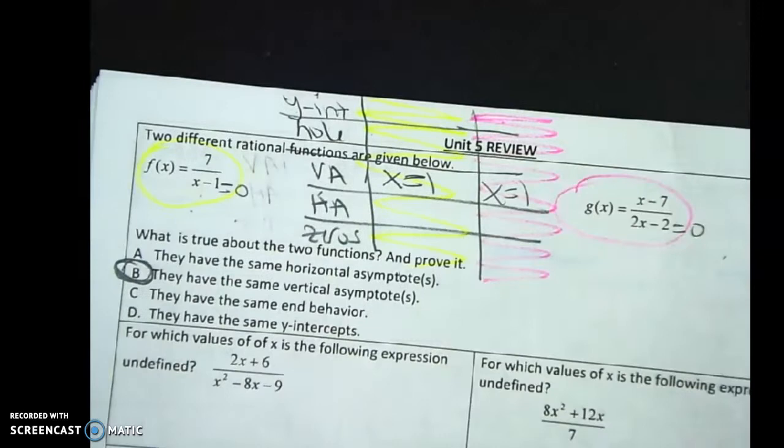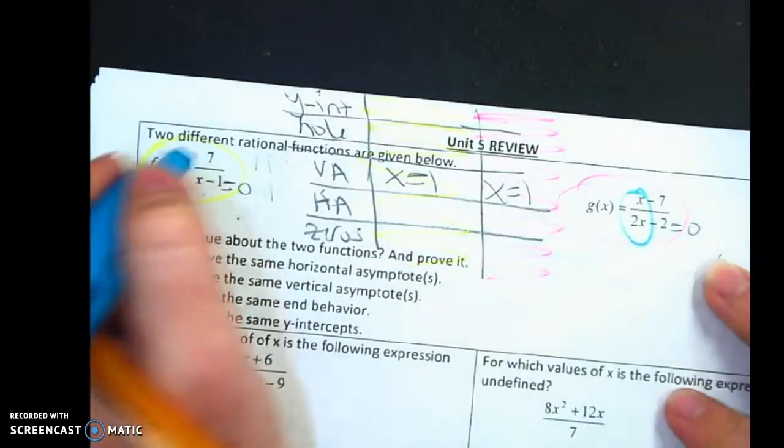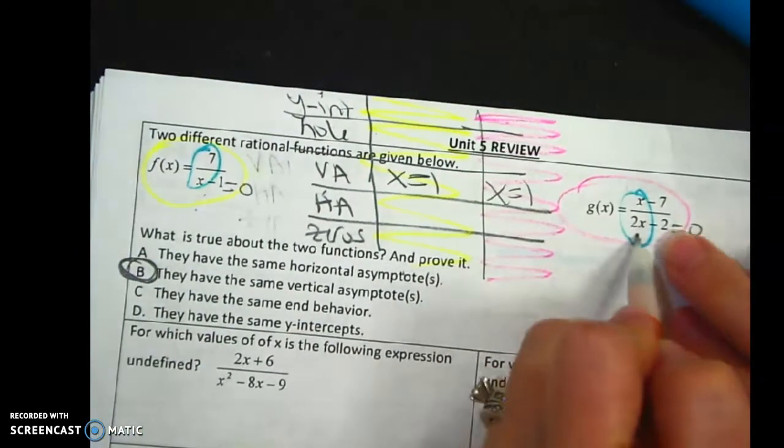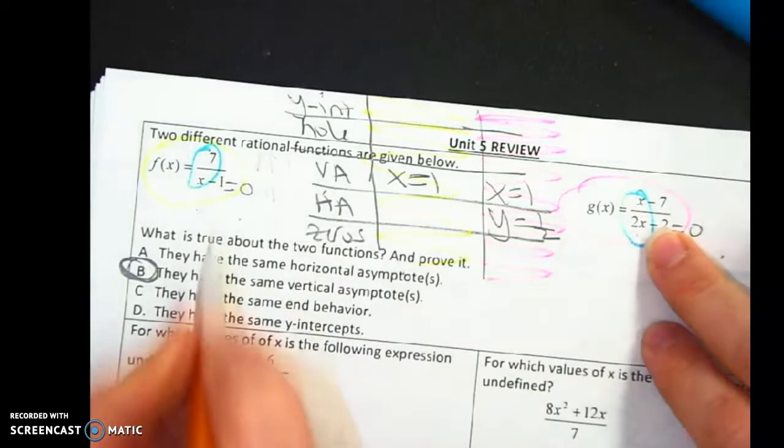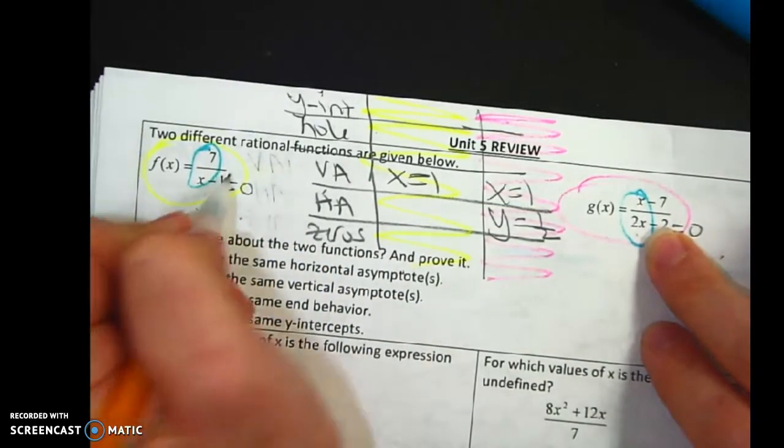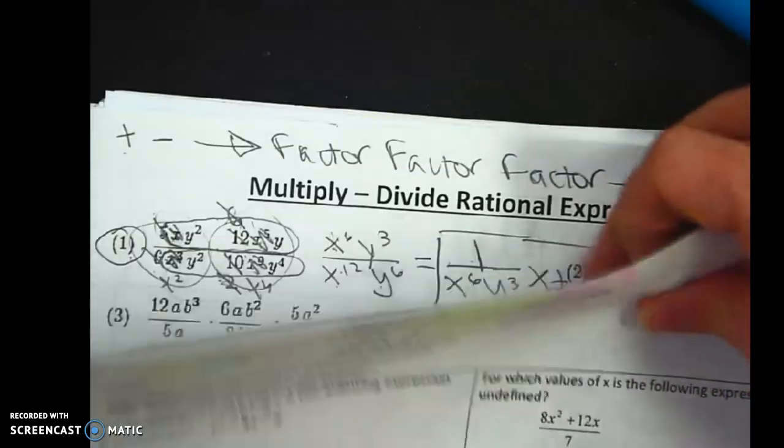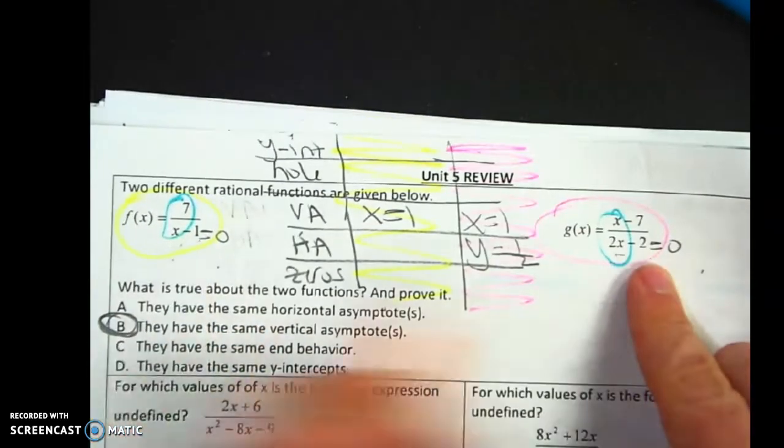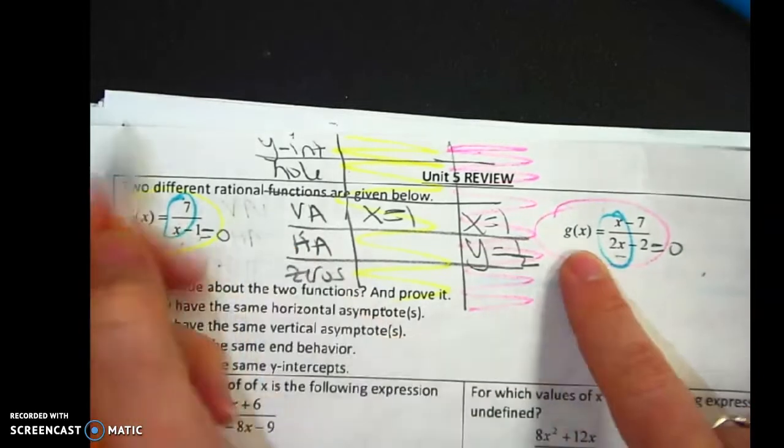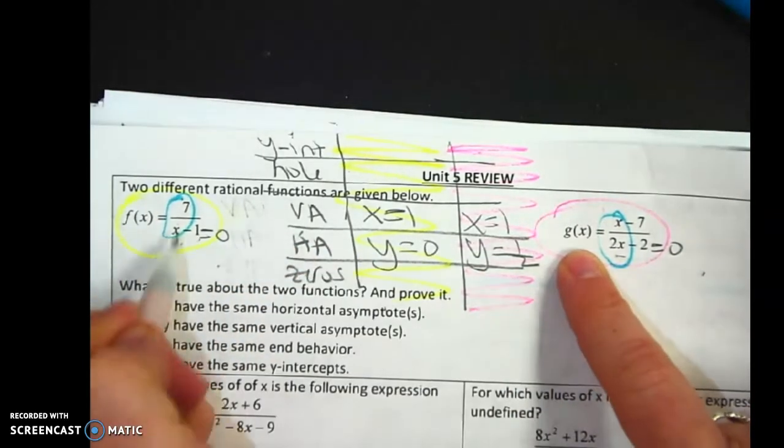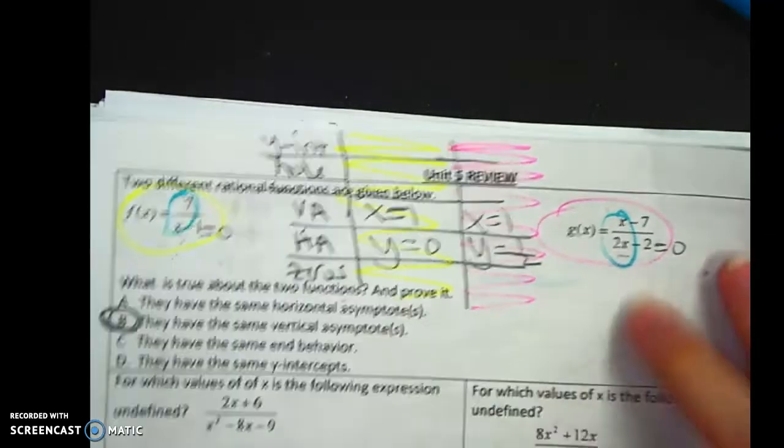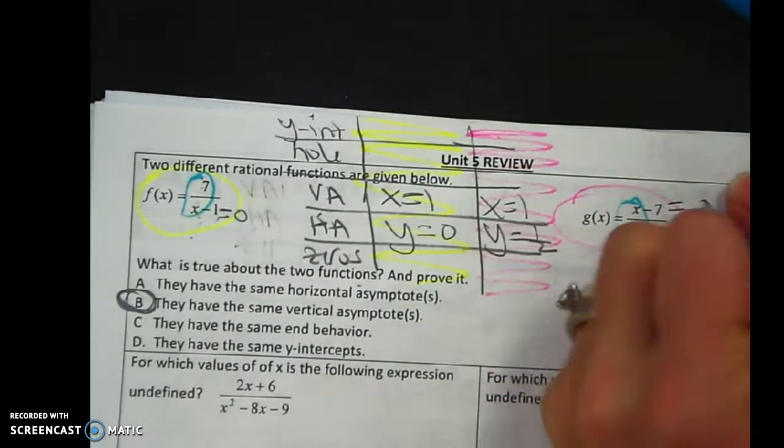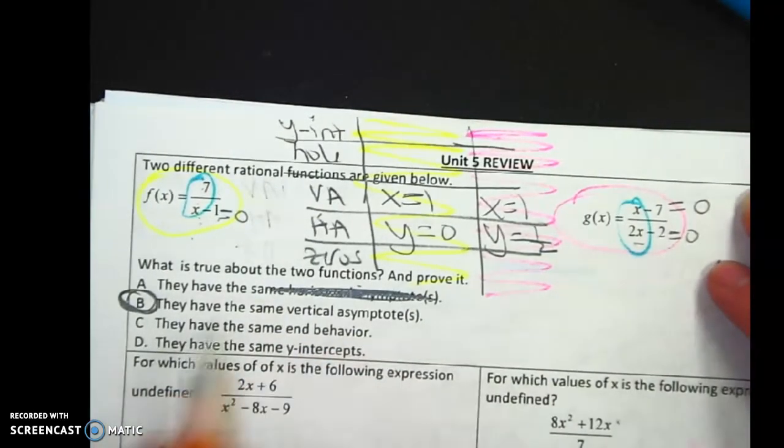To get the HA, remember the HA is based on what's here. So when these are exactly the same, the HA here is y equals one-half. And here, remember how this one's a little bit different. This is the one where it's going to be y equals zero, or because this one is less than this one, so it's going to be y equals zero.